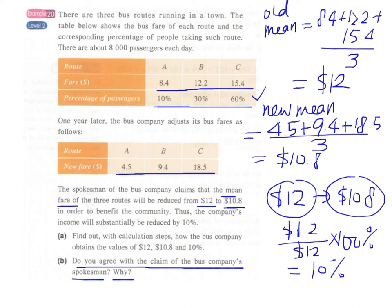We have to multiply the percentage of passengers with the bus fare, and then add them together to find the weighted mean of the bus fare.